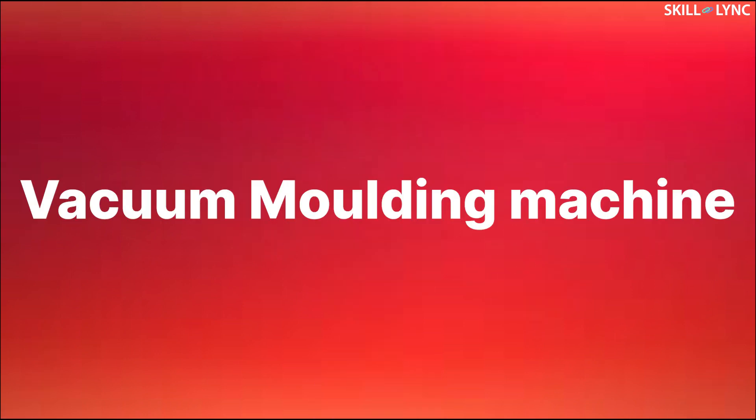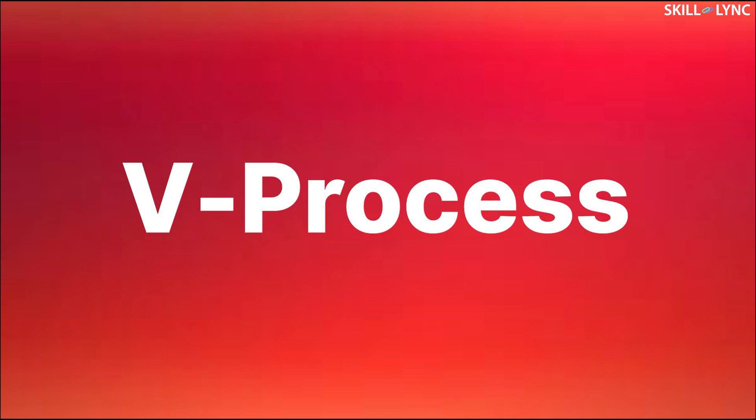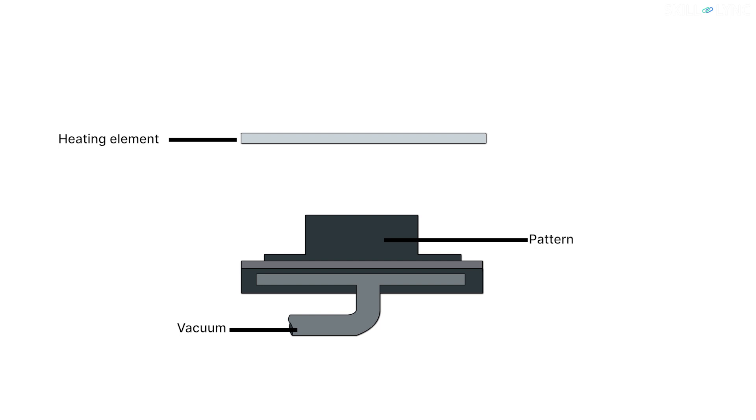Now let's talk about our final topic for today. Wondering what it is? Well, it's the vacuum molding machine. The method employed in this machine is also known as vacuum molding or the V process. In this machine, the pattern is enveloped with the help of a thick sheet of plastic.